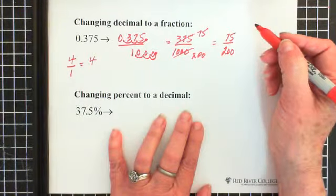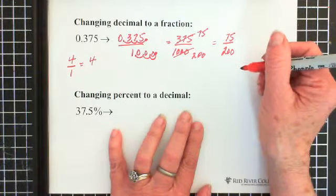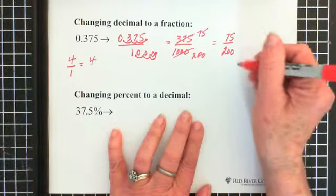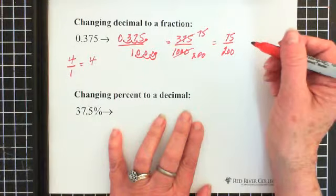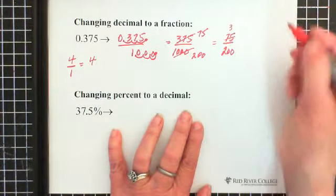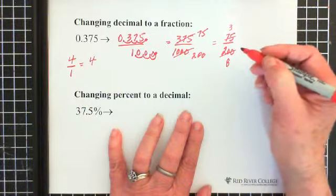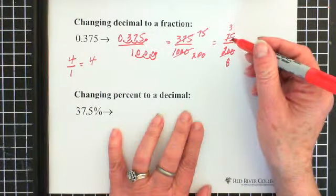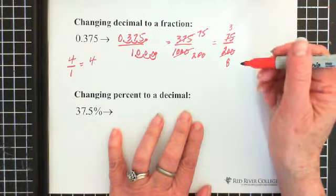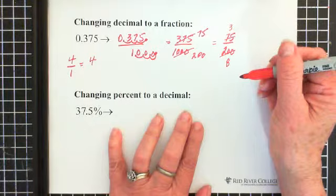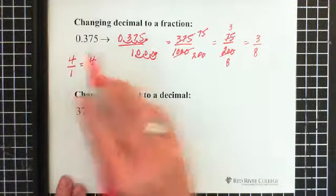Now again, we do the same thing, we reduce. So we ask ourselves, what are they both divisible by? Now at this point, you may say, oh yeah, I see there's 25. They're both divisible by 25. If you don't see that, if you only see the 5, then divide top and bottom by 5. But let's try the 25. So 75 divided by 25 is 3. 200 divided by 25 is 8. And if it's hard to see with numbers, think money. 75 cents divided by 25, so how many quarters is in 75 cents? There's 3 of them. How many quarters are there in 2 dollars? There's 8 of them. So we end up with a fraction of 3 eighths. So 0.375 is 3 eighths as a fraction.